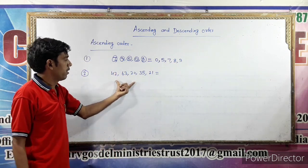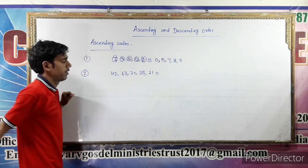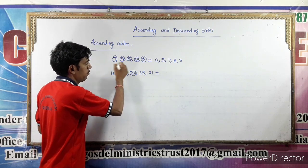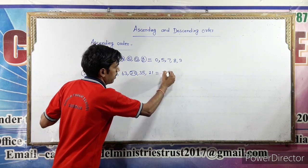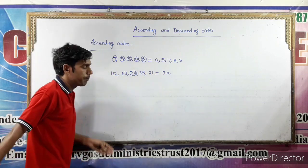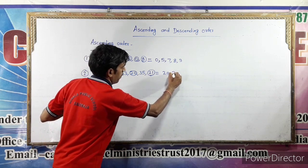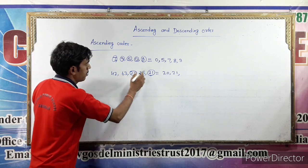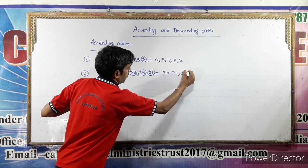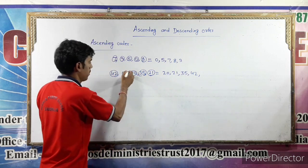Second example. Here we have 42, 63, 20, 35, 21. The smallest number is 20. So we write 20 first. Next smallest is 21. Then 35. Then 42. And last, 63.